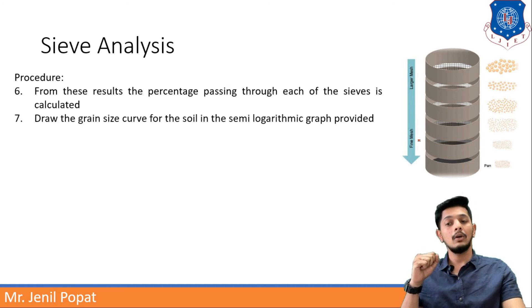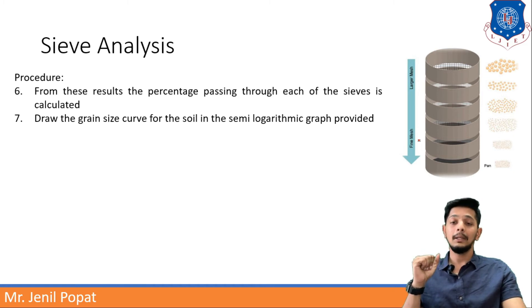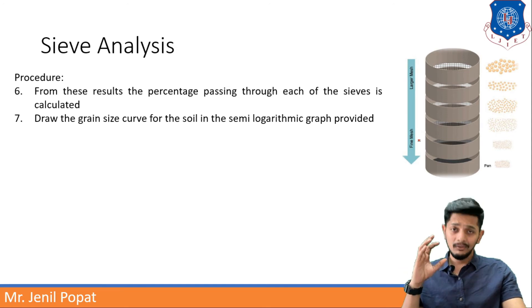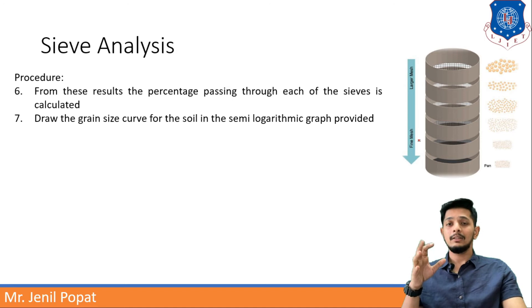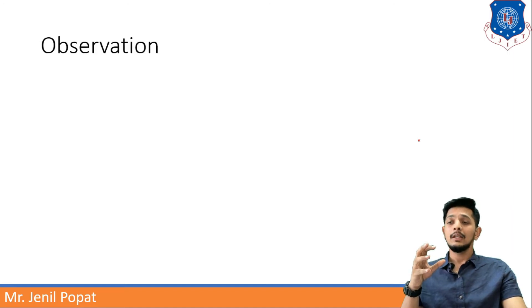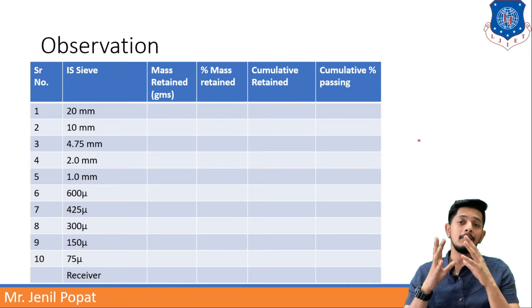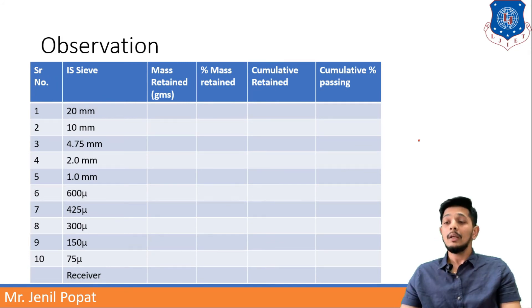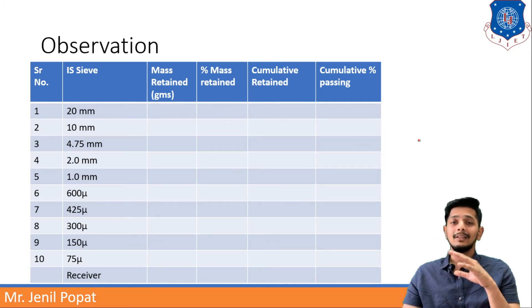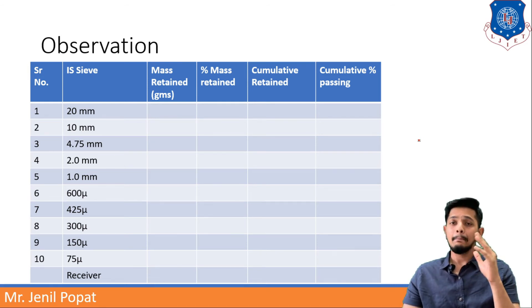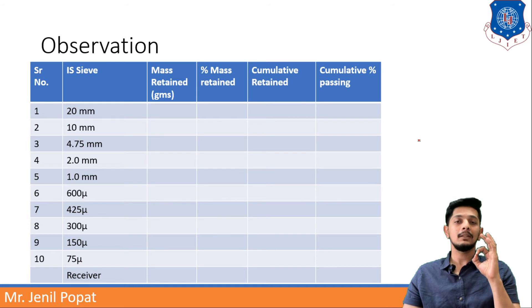Draw the grain size curve — you need to draw a curve for the soil in the semi-logarithmic graph provided. After this, you will fill an observation table. The different column heads are: serial number, IS sieve, mass retained in grams, mass retained in percentage, cumulative retained, and cumulative percentage passing.